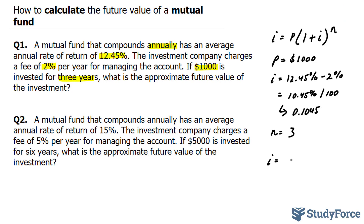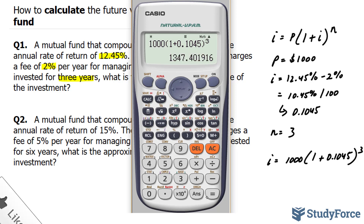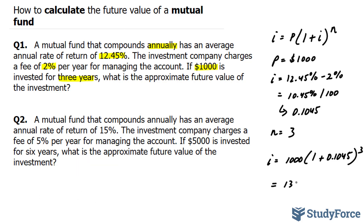The future value is equal to 1,000 times (1 + 0.1045) to the power of 3. Using our calculator, 1,000 times (1.1045)^3 gives us $1,347.40. This represents the approximate future value of this investment.